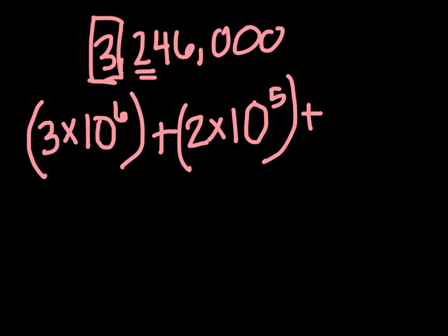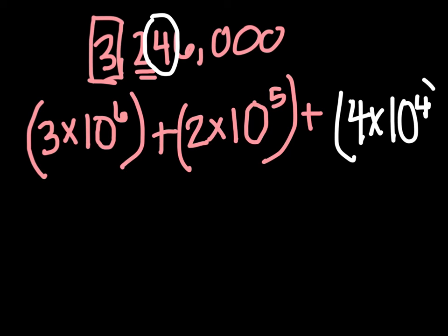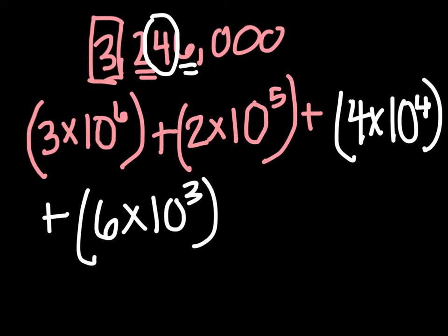Because each time I go from millions to hundred thousands to ten thousands, my power of 10 is getting one digit smaller. So with my 4 here, I have 4 times 10 to the 4th power. Plus, my last digit is a 6. And that's in the thousands place. So it would be 6 times 10 to the 3rd. So this is a great way to show you how exponents and place value can really work together to help us simplify a math problem.